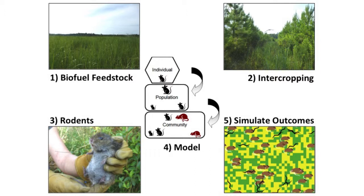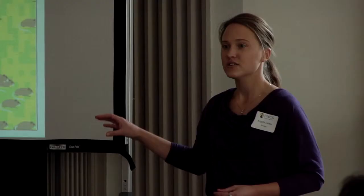I'm looking at how their individual behaviors — particularly using cotton rats as my model species, because that's my dominant captured animal — to see how they're driving the broader population. The population refers to species abundance: how many juveniles, how many sub-adults, and how many adults are in the area. I then hope to go up to the community level, talking about different populations of different species all within that area.